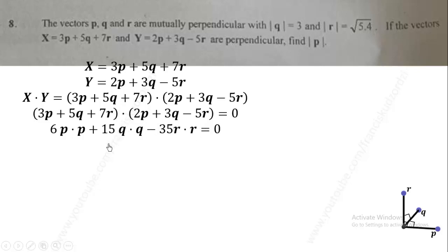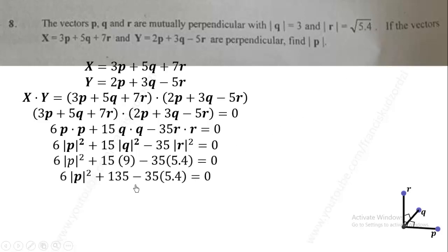Let's proceed from here. We know p dot p is equal to magnitude of p squared, q dot q is equal to magnitude of q squared, and r dot r is equal to magnitude of r squared. When we get this, we just have to square. Squaring both sides gives magnitude of q squared equal to 9, and magnitude of r squared equal to 5.4. Then we do the substitution and simplify.